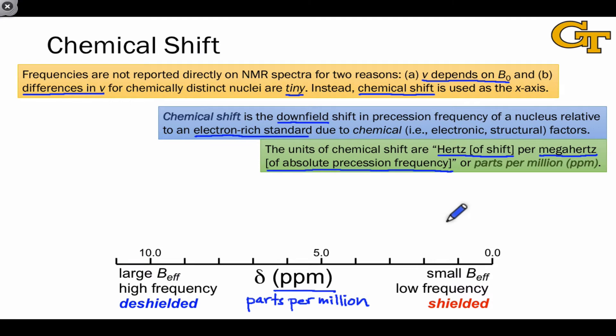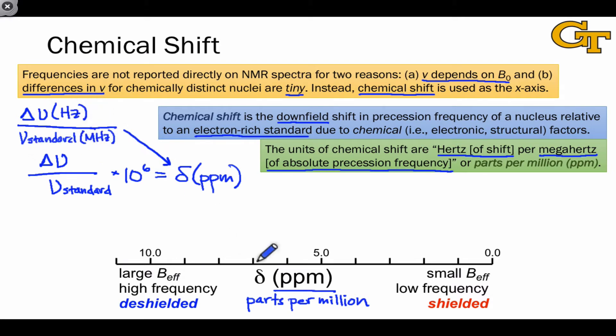When we divide the difference, delta nu, by the absolute precession frequency nu (where the denominator typically refers to our electron-rich standard), and multiply by 10 to the sixth, this gives us the chemical shift in parts per million. A totally equivalent way is to divide the change in frequency in hertz by the standard frequency in megahertz.